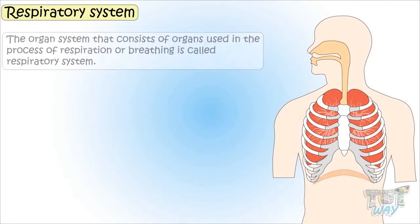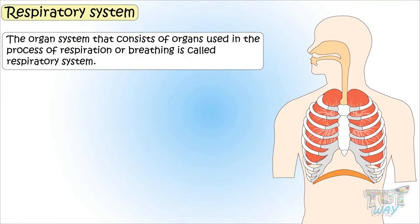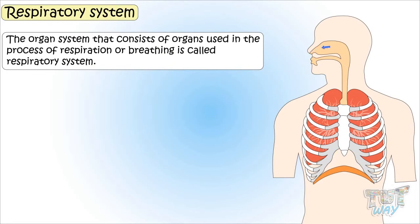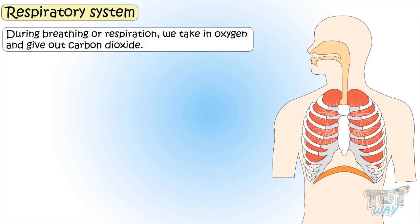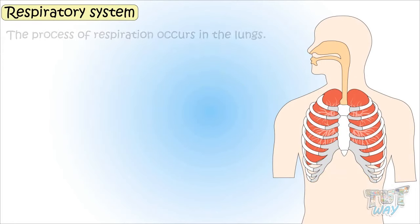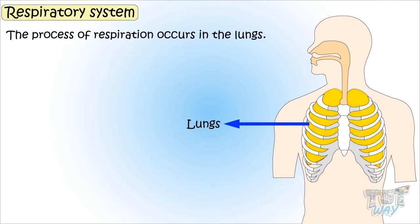The organ system that consists of organs used in the process of respiration or breathing is called the respiratory system. During breathing or respiration, we take in oxygen and give out carbon dioxide, and the process of respiration occurs in the lungs.